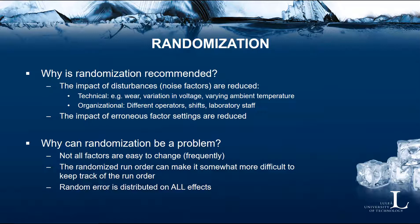Talking about randomization a little bit more — why is randomization important? The impact of disturbances and noise factors are reduced, such as technical noise factors, machine wear, variation in voltages, variation in ambient temperature, and so on. We can also have organizational noise factors such as the need to change operators, shifts, and laboratory staff during the experiment. We can also reduce the impact of erroneous factor settings, since in randomized designs we make more frequent changes of the factor settings than in non-randomized designs, so an erroneous factor setting normally affects fewer design runs in a randomized design.